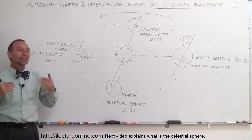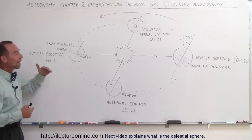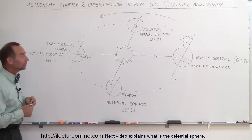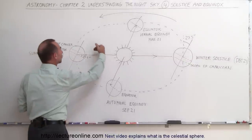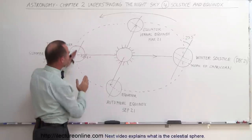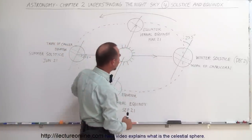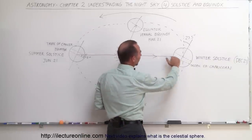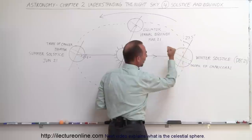Welcome to Electron Online. Let's take a look at the effects of sunlight striking the earth at different locations at different times of the year. Notice that when the light hits further north, it would be summer in the northern hemisphere. Since the tilt of the earth doesn't change as the earth goes around the ecliptic plane, in the wintertime the sunlight strikes the earth perpendicular to the surface much further south.